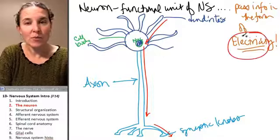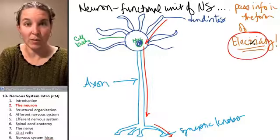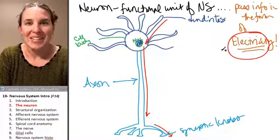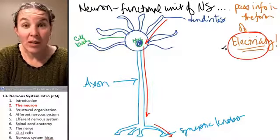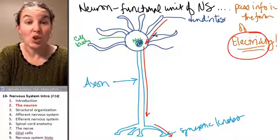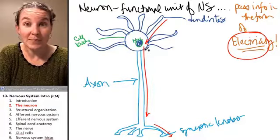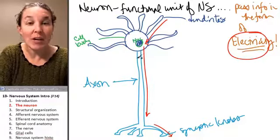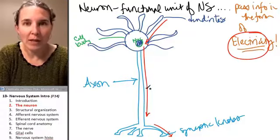And that process, again, is not the important part. So by definition, dendrites deliver information toward the cell body. Axons deliver information away from the cell body.